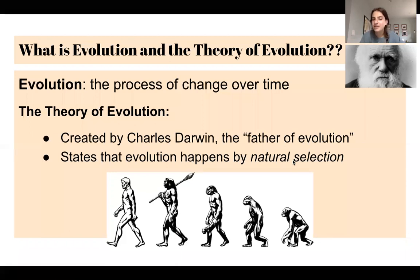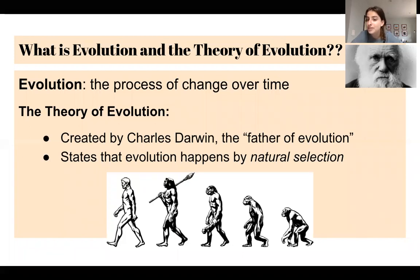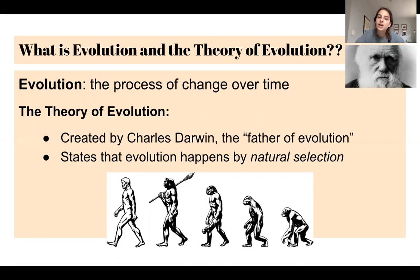So what is evolution and the theory of evolution? Evolution is the process of change over time, and the theory of evolution was created by Charles Darwin — also on the screen here — known as the father of evolution. He stated that evolution happens by natural selection, which we're going to get into.